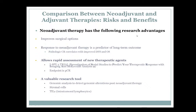Neoadjuvant therapy also has research advantages — our researchers love it because it allows rapid assessment of new therapeutic agents. One big obstacle to developing new cancer therapy is it takes forever for all the approvals, but with neoadjuvant you can quickly test a drug's effectiveness. Both the University of Kansas and University of Minnesota are involved in the I-SPY-2 phase two/three clinical trial testing new therapeutic agents neoadjuvantly. Because you have the cancer in front of you, you can test new drugs — with pre-treatment and post-treatment data, it's a very valuable research tool.